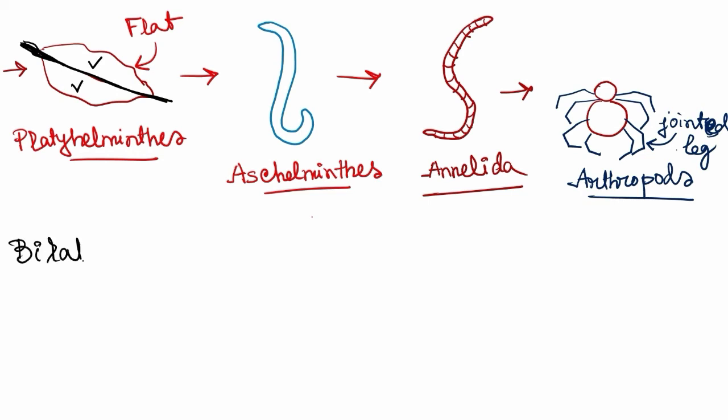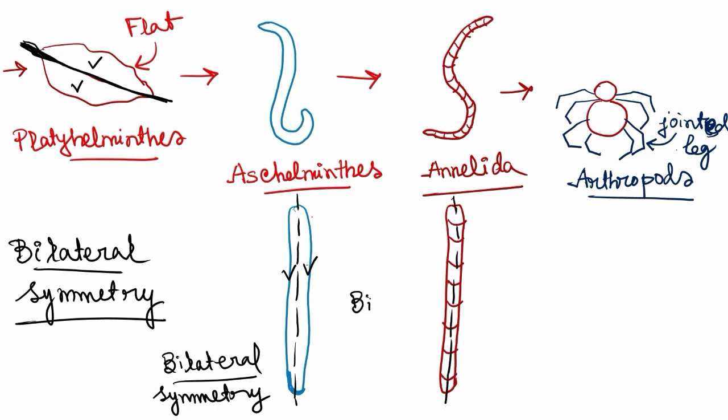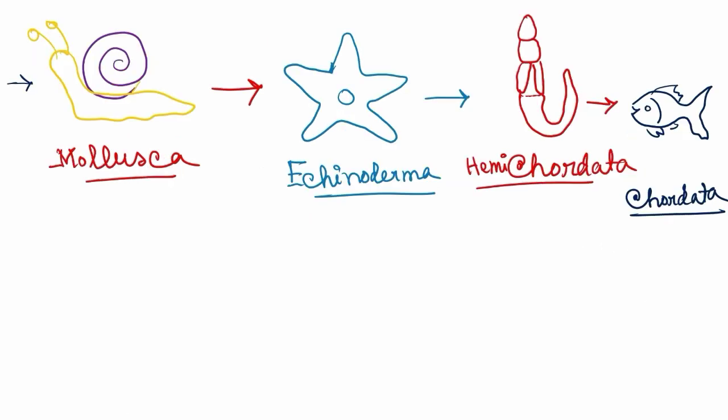In the next phylum, platyhelminthes, if we draw a line from top to bottom of the animal, the line divides the body of the animal into two equal halves. So this is called bilateral symmetry. It is also found in aschelminthes and annelids. If we cut the body into two parts, we will get equal parts. It is also found in the arthropods. They also have bilateral symmetry.